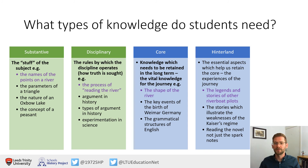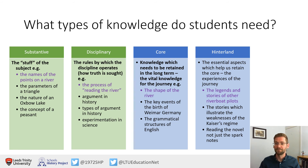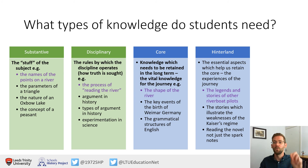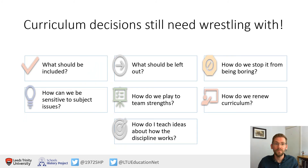In English, core knowledge might be grammatical structures or key themes of a novel, and the hinterland is reading the novel itself rather than just the SparkNotes — immersing yourself in the way the story is told and the way the author uses language. That's hinterland knowledge that makes the core meaningful and helps you retain it far more effectively than just learning the stuff. And it's really important to say that curriculum decisions still need wrestling with.